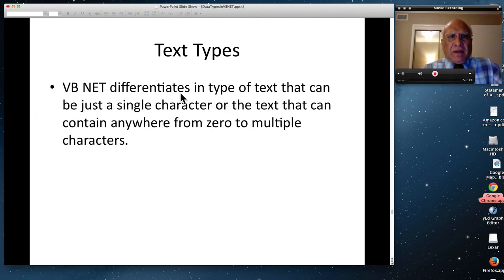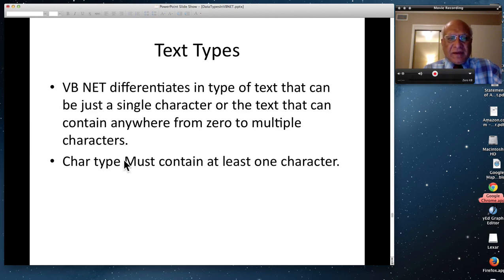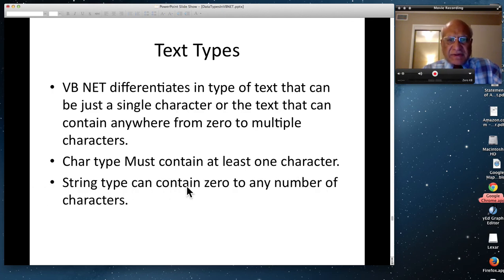Text types are two. And VB.NET differentiates in type of text that can be just a single character or text that can contain anywhere from zero to multiple characters. The type, char, I call it char, contains or must contain at least one character. But the string type can contain zero or any number of characters, starting from zero to any highest limit. Of course, based on the memory available, there is a higher limit. But in practical sense, there is a limit. But theoretically, string type can contain any number of characters.